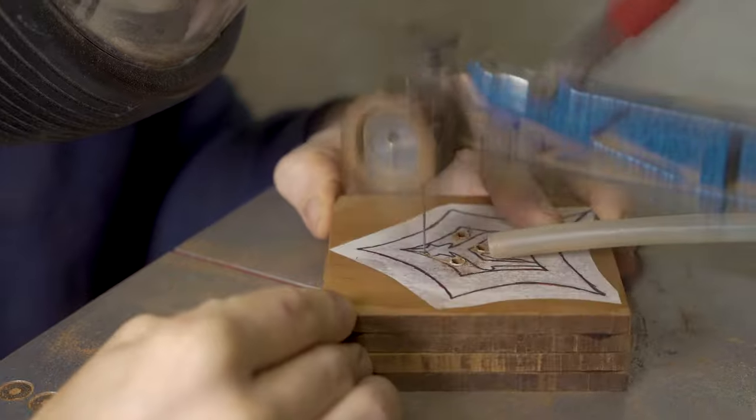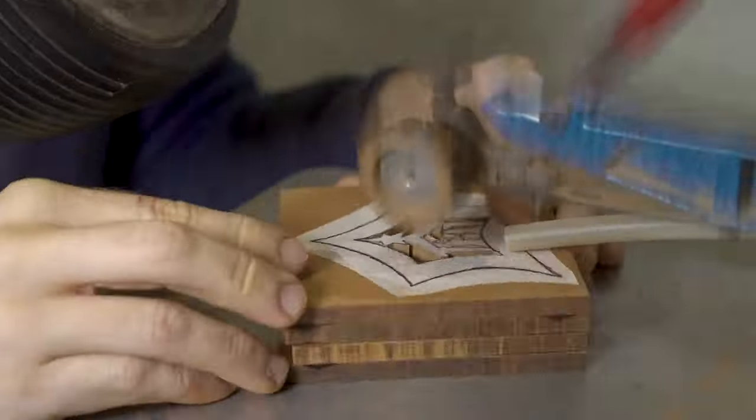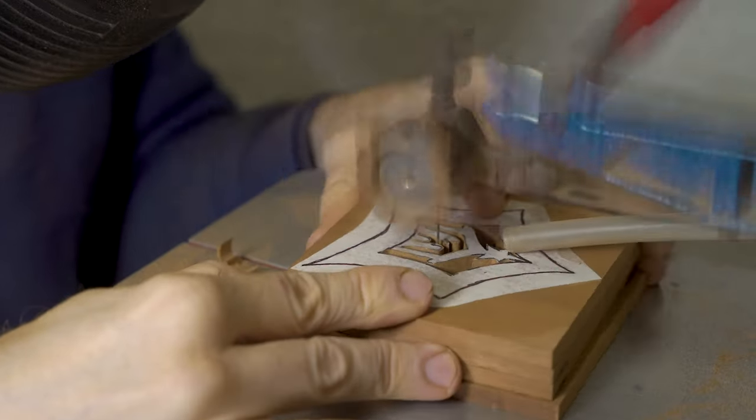On our second project we start by cutting out the nativity scene inside the star and finish off by cutting out our star-shaped outline.